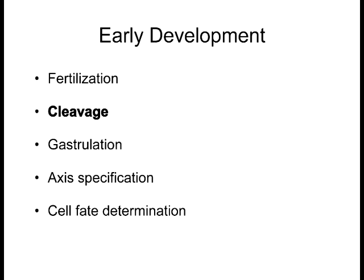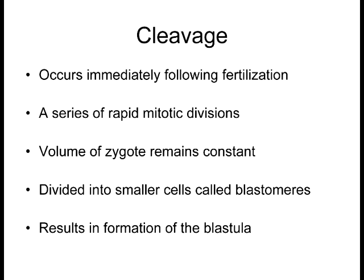Cleavage is essentially mitosis and cytokinesis. In some species, cleavage can occur over and over without any growth of the zygote itself. That's the case with frog embryos — you go from one large zygote to hundreds of tiny cells before any of these cells initiate the growth phases of the cell cycle. In reality, certain organisms skip G1 and G2 phases entirely, performing only mitosis then DNA replication, over and over again.